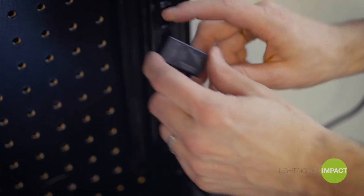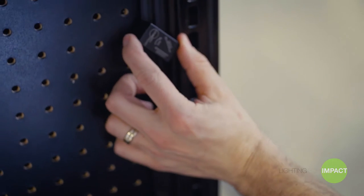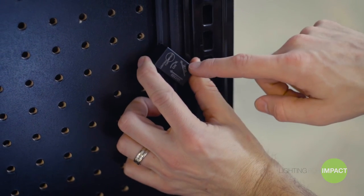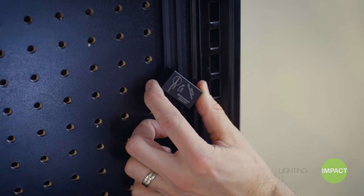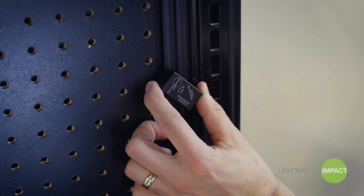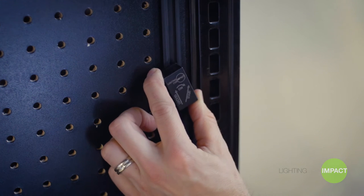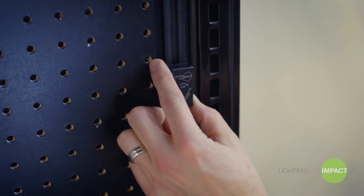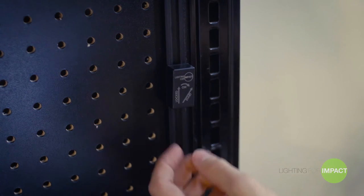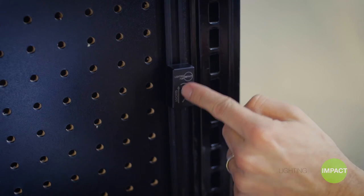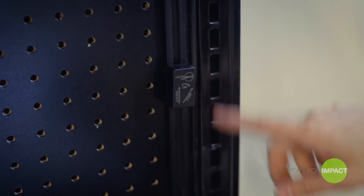To install a connector, line up the start arrow straight up and down with the power strip. Make sure the connector is pressed into the power strip and rotate to the right following the on arrow. Once it's in position, you'll hear a snap and the locked arrow will line straight up and down with the power strip.